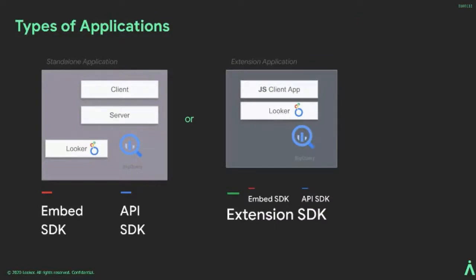Let's take a look at some types of applications. When a customer has leveraged the Looker platform, they can use that to build a standalone application, or they can build applications right on Looker. In the standalone application case, customers are basically leveraging our iFrames and APIs to build applications for extended use cases or workflows — sometimes using the embed SDK or API SDK together or alone. And then you have the extension application, which is client-side only, lives right inside of Looker, and can also leverage our iFrames and APIs as well.